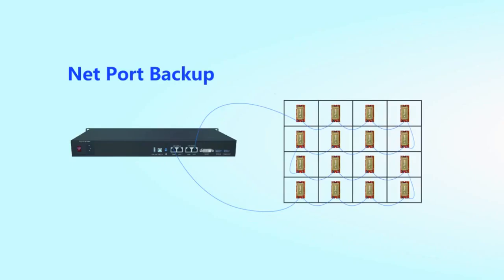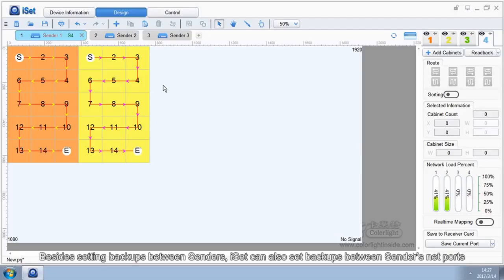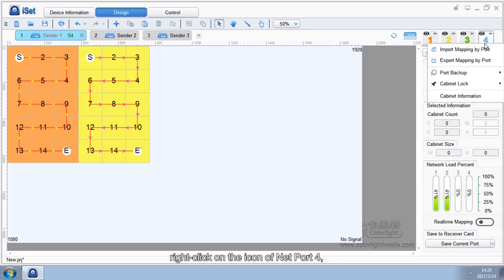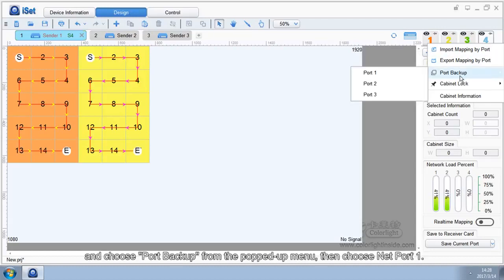Net Port Backup. Besides setting backups between senders, ISAT can also set backups between sender's NetPorts. For example, if we need to set NetPort 1 as the backup port of NetPort 4, right-click on the icon of NetPort 4, and choose Port Backup from the popped-up menu, then choose NetPort 1.